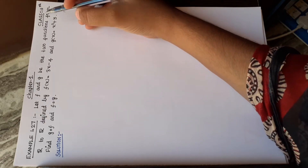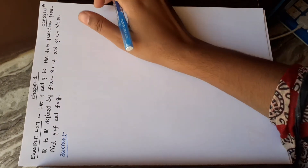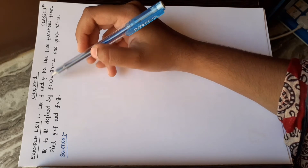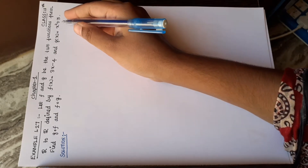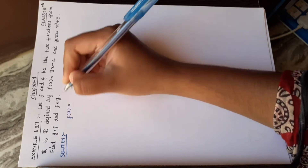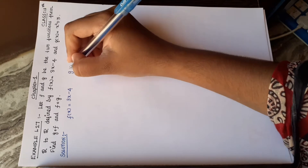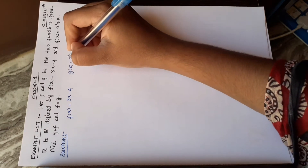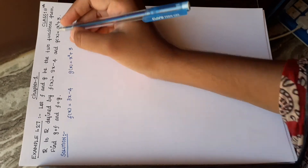Welcome to Rifasmax 11th Standard Chapter 1 Example 1.27. Let f and g be two functions from R to R defined by f(x) = 3x - 4 and g(x) = x² + 3. Find g of f and f of g.